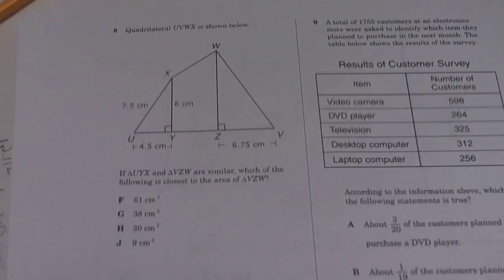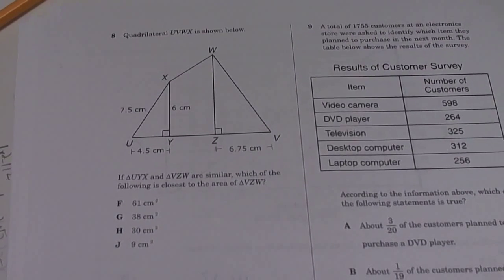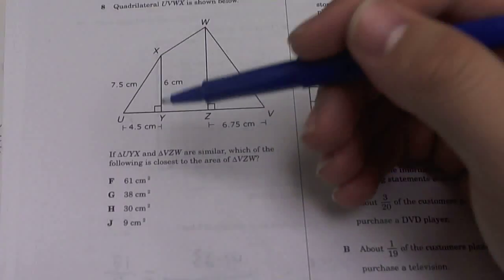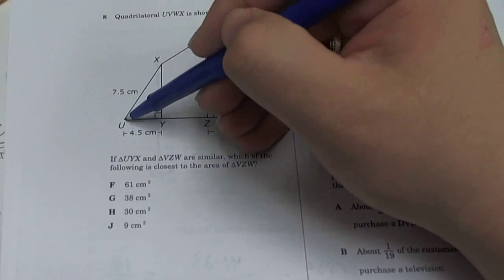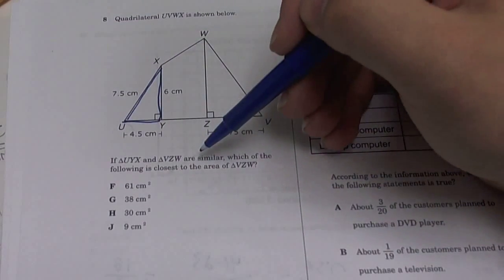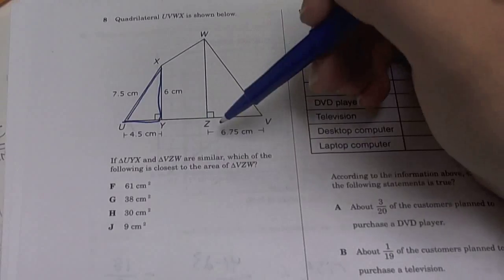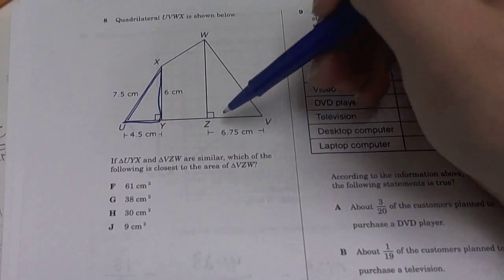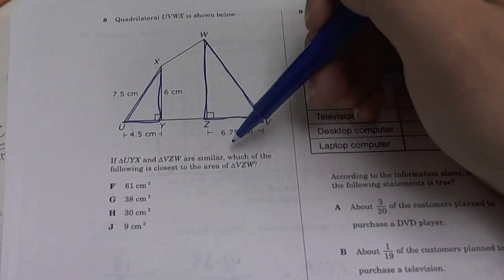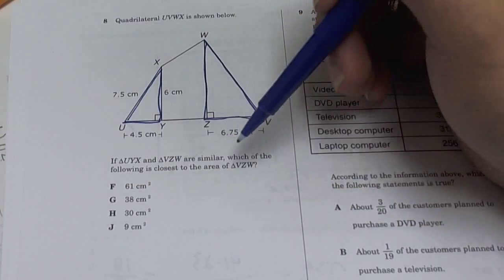Number 8. A quadrilateral UVWX is shown below. So if triangle UYX and triangle WZV - these two triangles are similar - which of the following is closest to the area of triangle VZW?